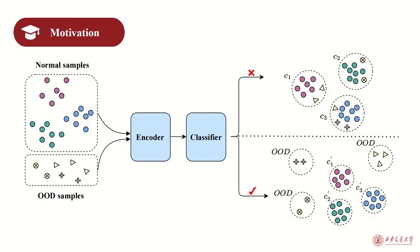Our motivation stems from the fact that in Few-Shot classification tasks, it is often assumed that the samples for training and testing come from the same common classes. However, some samples for testing may actually not belong to any known classes in the training set in practical applications. These samples are called out-of-distribution samples, or OOD samples.